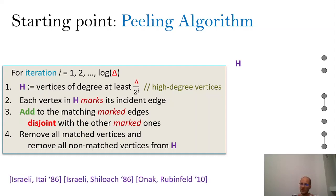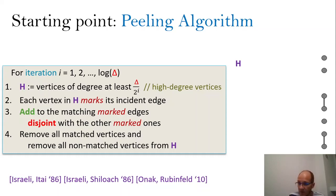A variant of this algorithm was designed in the 1980s in the context of parallel algorithms (PRAM), and later several different variants were used in different results — even for dynamic algorithms and MPC algorithms. If there is something to take from this talk, it is really this algorithm, because of its generality. It has been used over the years for many results, and it is a very simple and robust algorithm, robust to changes in the setting of parameters.